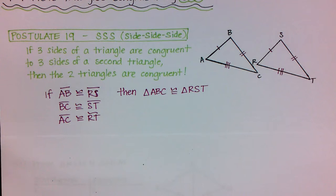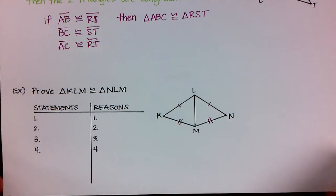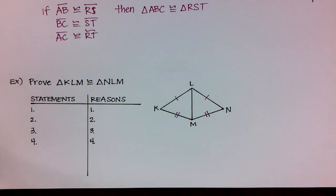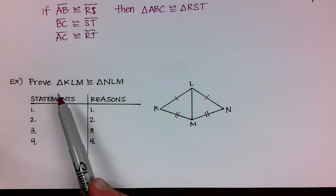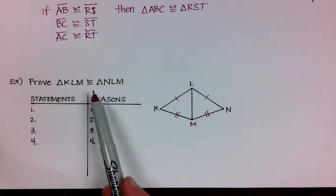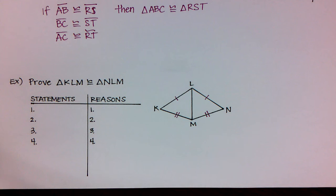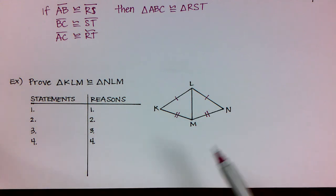Let's go ahead and do one example related to this. I want you to prove that triangle KLM is congruent to triangle NLM. When we see them in a specific order, we need to relate them to those specific points as well. I'm just given a diagram, so based on this diagram let's see what we can find.